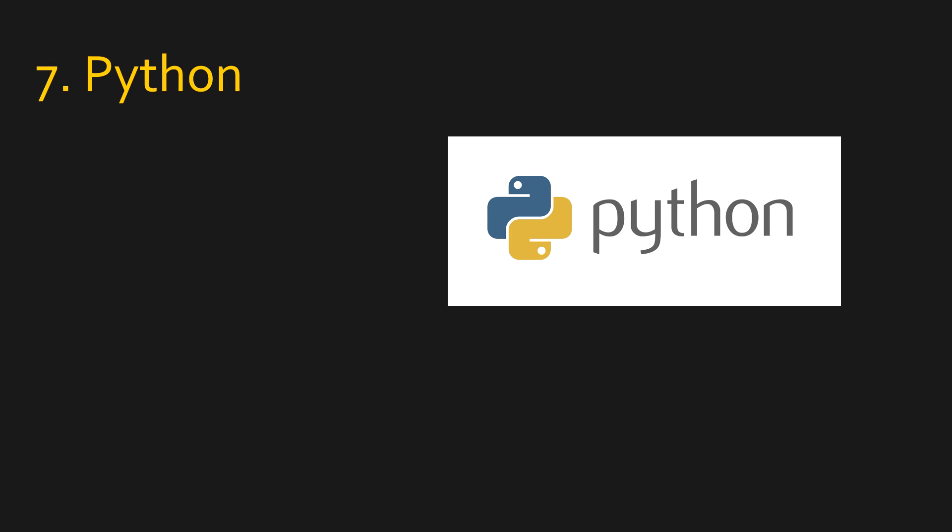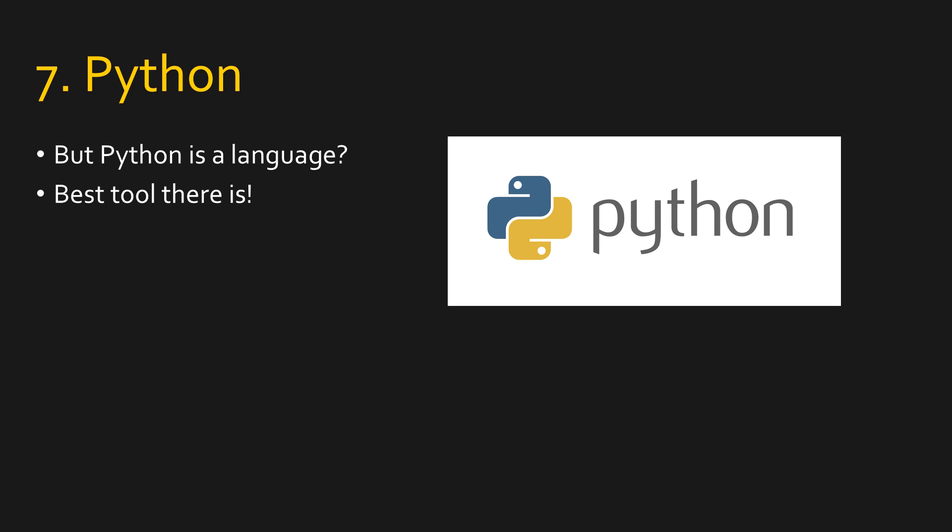Number seven on the list of network automation tools is Python. You might say Python is not an automation tool — Python is a language. But to be honest, Python is the best network automation tool there is. It is so configurable; you can make it do whatever you want. You obviously need to learn Python and be a bit of a programmer, but once you've got some basics under your belt, you will begin to appreciate the amazing power that just having some Python knowledge gives you as a network engineer. Some of you might have heard of Nornir, which is another automation tool following in the footsteps of Ansible, but it is more of a hardcore Python base and gives you a lot more control over what you want to do.